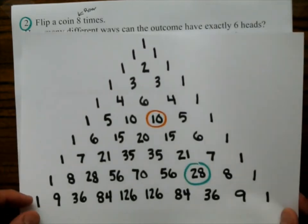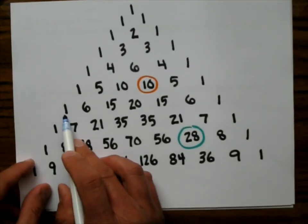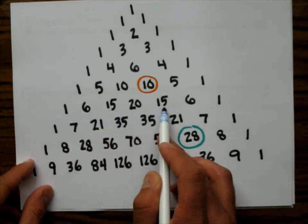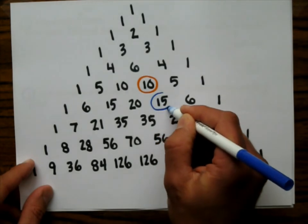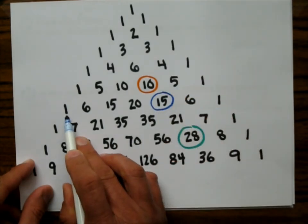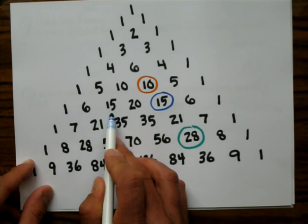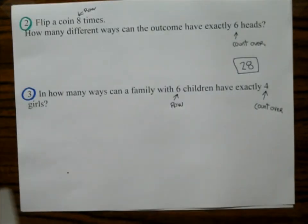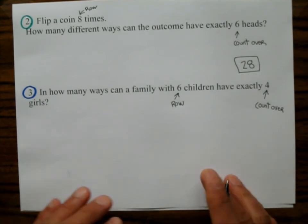So row six, count over four. Row six, count over four. One, two, three, four. And that gives me 15. So notice, if I had counted over two for the boys, one, two, I would have got 15 because of the symmetry of Pascal's triangle. So 15 is the answer.